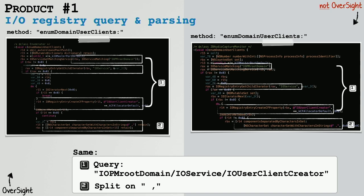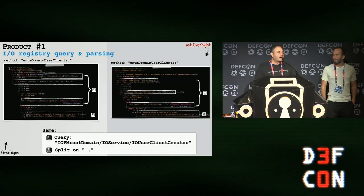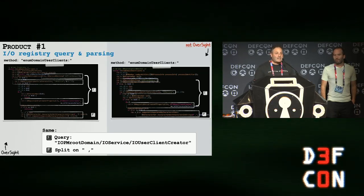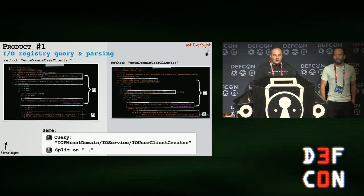Another aspect is the unique IO registry lookup. When you look for these specific key-value pairs used in Oversight, you don't really get a lot of hits anywhere. When we look at the first product, we see the exact same steps going on with Oversight — right down through the method names — which is a telling indicator that this could have come from the same source.